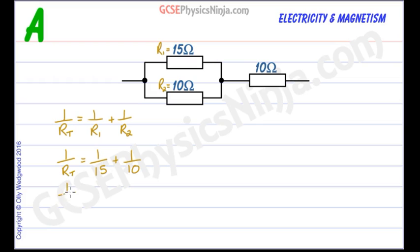So let's combine these together. 1 upon RT is equal to 5 over 30, adding those fractions together. And now you can do a little flip and literally flip both sides of the equation. They're both fractions. So RT is equal to 30 over 5. It would be RT upon 1 but that's the same thing as RT.